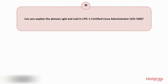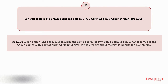Question number 13: Can you explain the terms SGID and SUID in LPIC1 Certified Linux Administrator? When a user runs a file, SUID provides the same degree of ownership permissions. When it comes to SGID, it comes with a set of finished file privileges. While creating the directory, it inherits the ownerships.